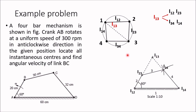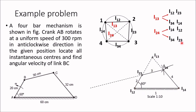To find I24, draw a line through I14 and I12, and another line through I34 and I23. The intersection of these two lines is I24. In this way, all six instantaneous centers have been located.